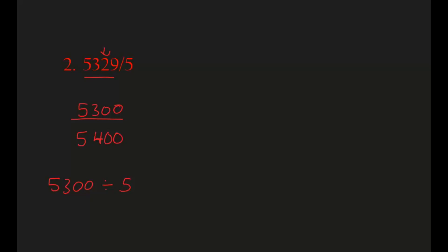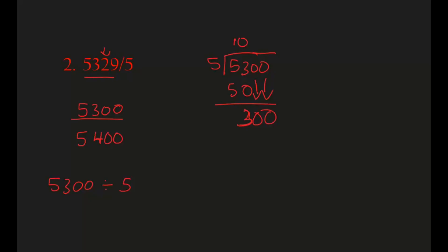Now we will do 5,300 divided by 5. Let's set it up: 5 goes into 5,300. We know that 5 times 10 equals 50. We subtract: 3 minus 0 equals 3, and 5 minus 5 equals 0. Then we bring the two zeros down.